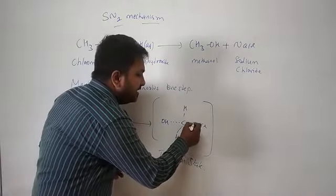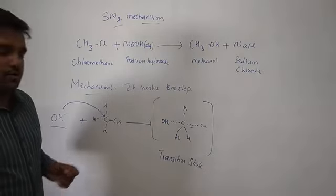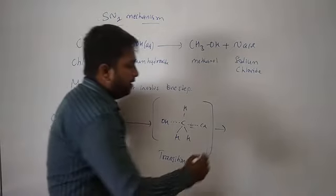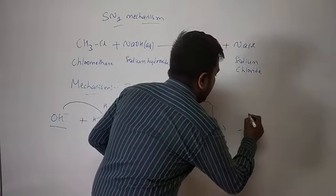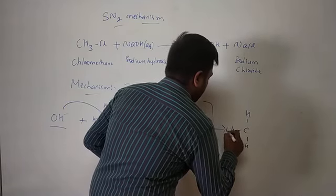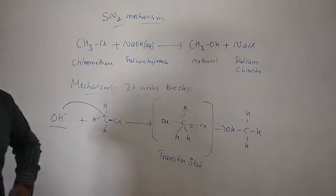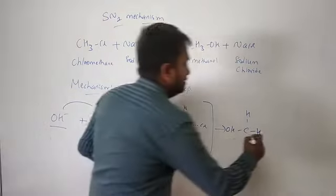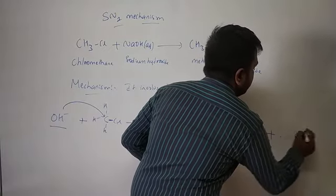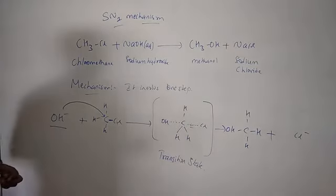After the transition state, the C–Cl bond is completely broken and the C–OH bond is completely formed, giving the final product: methanol (CH₃OH) and Cl⁻. So this is the SN2 mechanism — the mechanism takes place in a single step, where the formation of the new bond and the breaking of the old bond occur simultaneously.